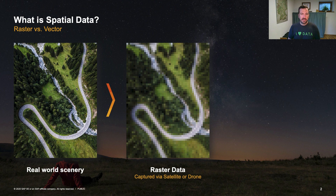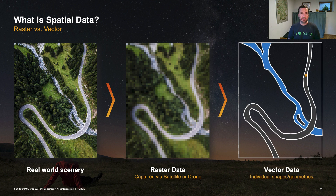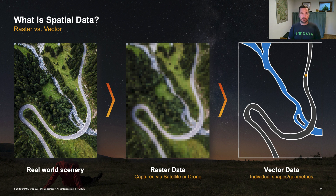Out of that raster image, we can extract so-called vector data. Vector data is what you see here. You have essentially a polygon for the road, you have a polygon for the river, you see that there's even a gap or a hole in that river polygon, and you have a point for the car that is driving on the road. So when we're talking about HANA's geospatial processing engine, we're always in the domain of geospatial vector data.